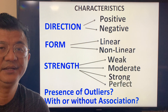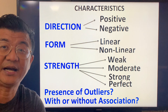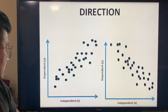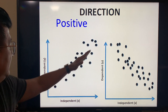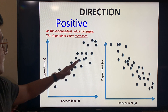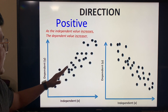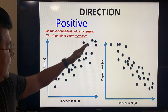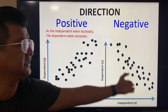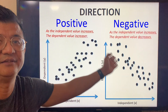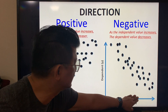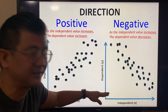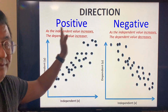Today we study the following: direction, form, strength, presence of outliers, and association. Starting with direction: it can be positive — as one increases the other increases, and as one decreases the other decreases. Or it can be negative — as one increases the other decreases.